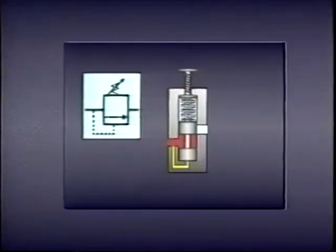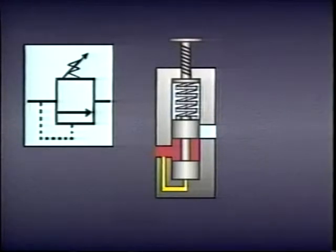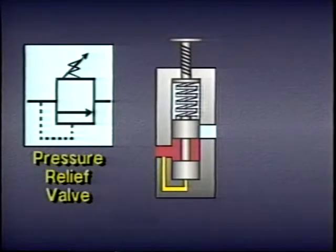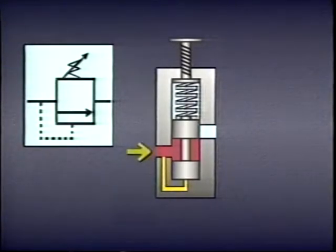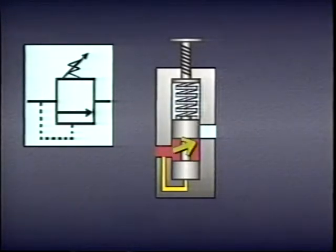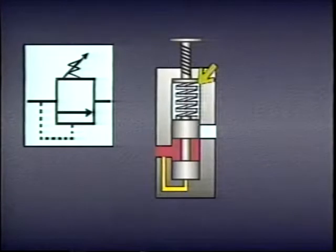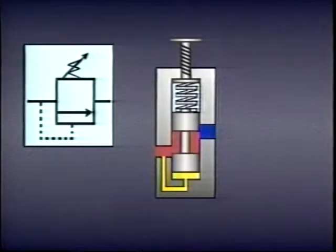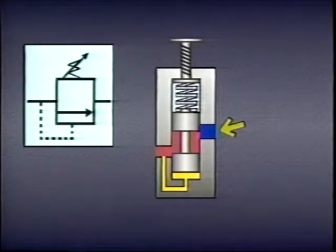Let's take a close look at valves that sense pressure directly. Most of them are normally non-passing, like a pressure relief valve. The passage through the valve from the primary or inlet port to the secondary or outlet port is normally non-passing, so it remains closed until pilot pressure at the primary port overcomes the force exerted by an adjustable spring biasing the valve spool. When that happens, the spool shifts and the valve opens. Typically, a relief valve is used to limit the pressure in the system by allowing fluid to return to tank when system pressure exceeds the setting on the relief valve.